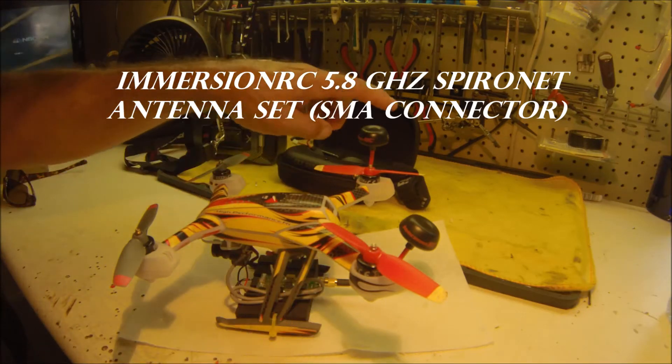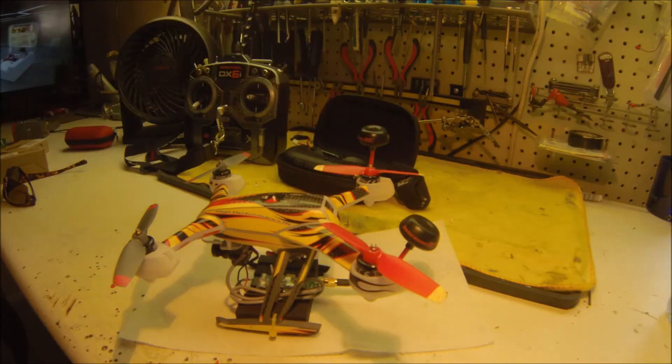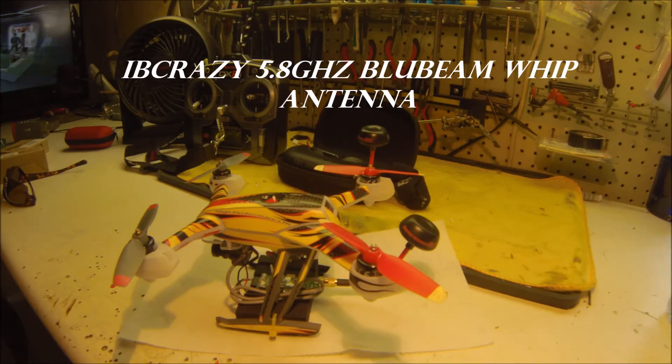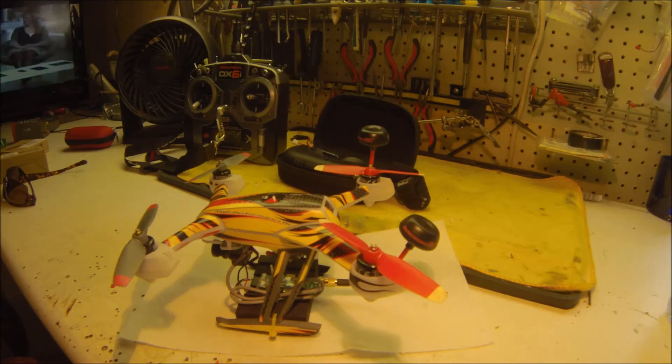I was going to get the cloverleaf ones, the IBC Blue I believe they were, but when I went to get FPV here in Sarasota they didn't have any. They were all out of stock, so this was a step down from what I needed. I ended up going with that versus using the stock antennas.